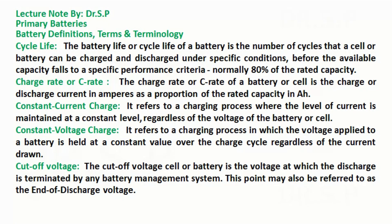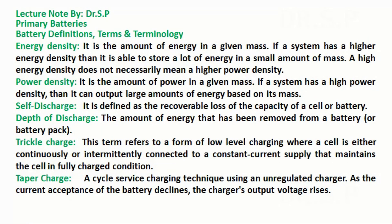Cutoff voltage: the cutoff voltage of a cell or battery is the voltage at which the discharge is terminated by any battery management system; this point may also be referred to as the end of discharge voltage. Energy density: it is the amount of energy in a given mass. If a system has a higher energy density, it is able to store a lot of energy in a small amount of mass. A high energy density does not necessarily mean a higher power density.